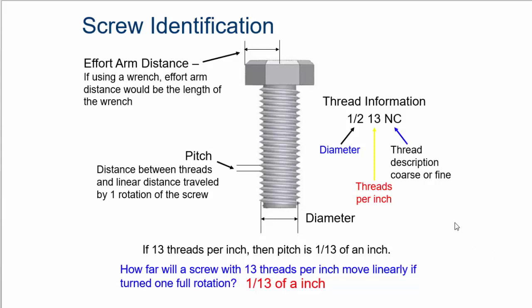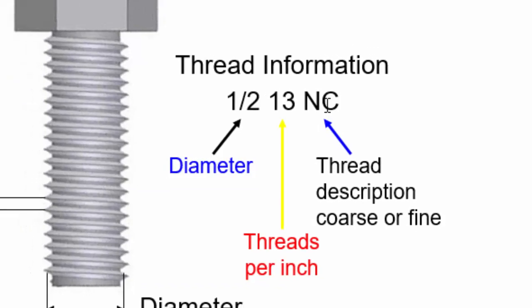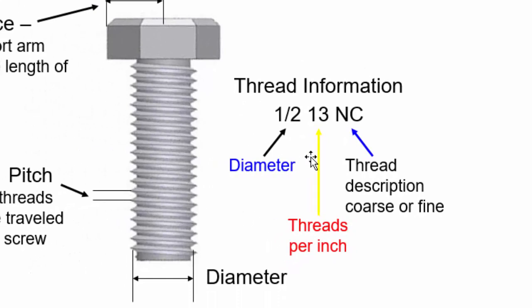How do you identify a screw? It's pretty easy. Here's the thread information over here. This thread information says that this is a 1/2-13 NC screw. And that's how you buy screws and bolts. This happens to be a bolt. And this bolt is a 1/2-13 NC.